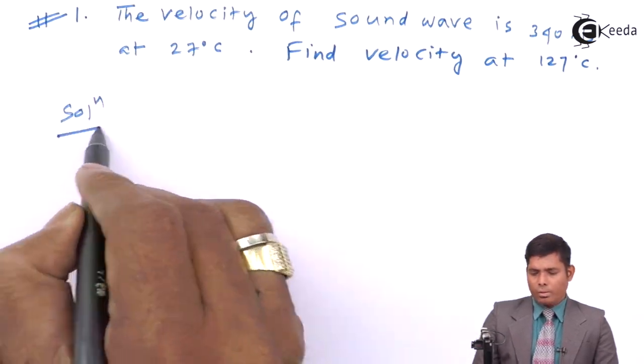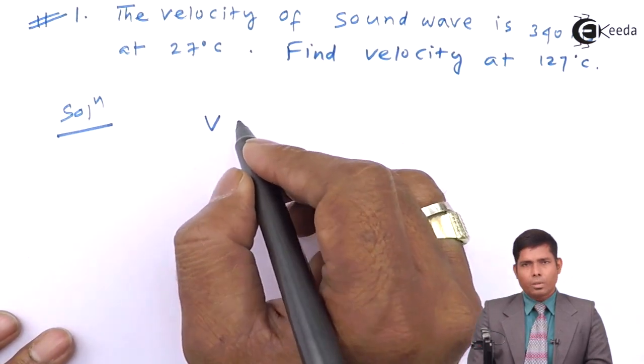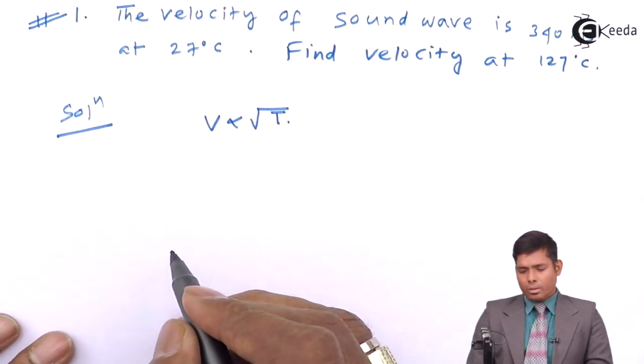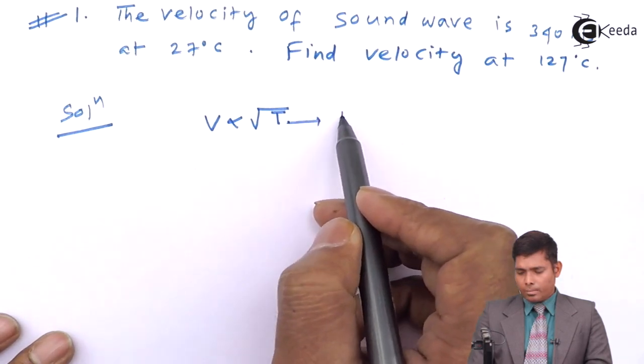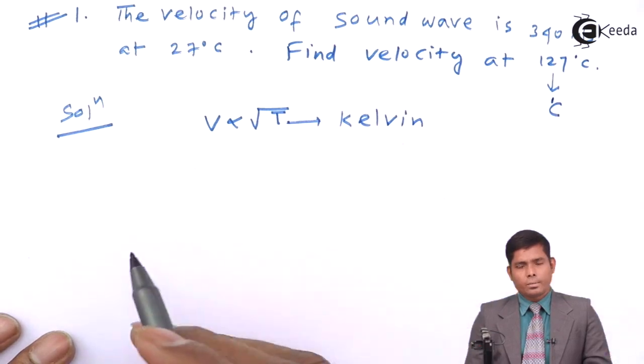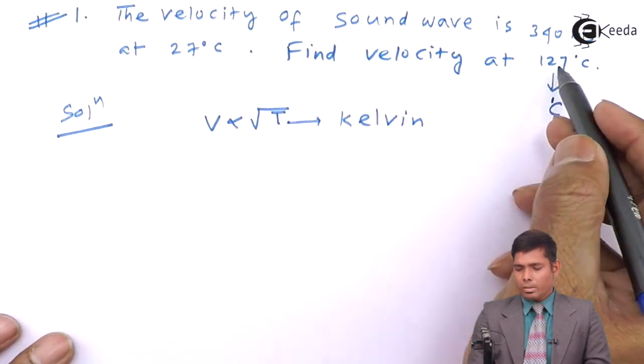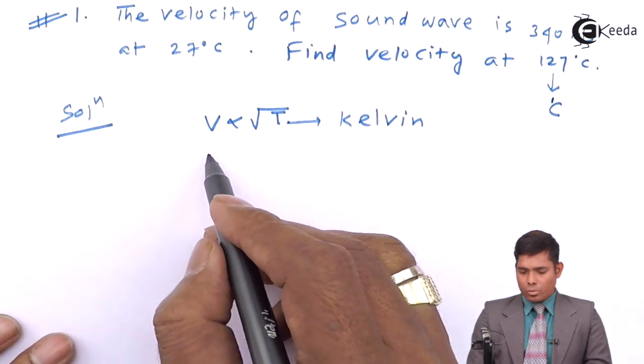Now, you have to solve this. We have the relation that the speed of sound is proportional to square root of temperature and this temperature should be in Kelvin and this is in centigrade. So, you have to convert this, this will be 300 and this will be 400.